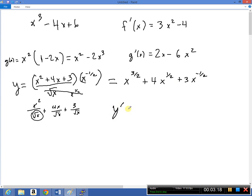But then dy dx or y prime can be calculated directly from here as 3 halves x to the 3 halves minus 1 which is 1 half plus 1 half times 4 which is 2 times x to the 1 half minus 1 which gives you minus 1 half. And 3, let's see, the 1 half comes down so you're going to have minus 3 halves x to the minus 1 half minus 1 gives you minus 3 halves.